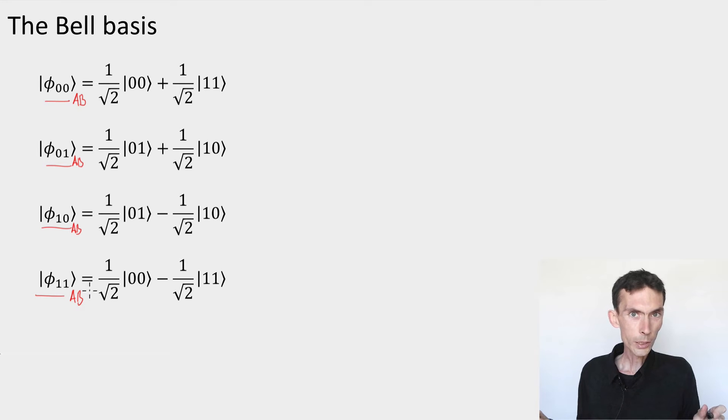And this family of states has two important properties. First, as I already kind of leaked to you, it's a basis. So you can check that all the states are normalized. This is pretty clear. You can also check that all of them are orthogonal.